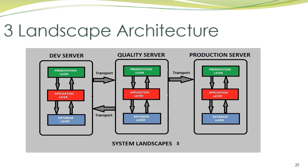What you see is a three landscape architecture. The presentation layer, application layer, and database layer are common across all the servers. Three landscapes means three servers — one, two, and three — so it is called a three landscape system. Once codes are developed inside the development server, they are transported to the quality server where codes are put to rigorous testing. If the coding meets the requirement, it is transported to the production server. If not, it is sent back to the development server, and this process repeats until 100% final code matching the requirement is met.